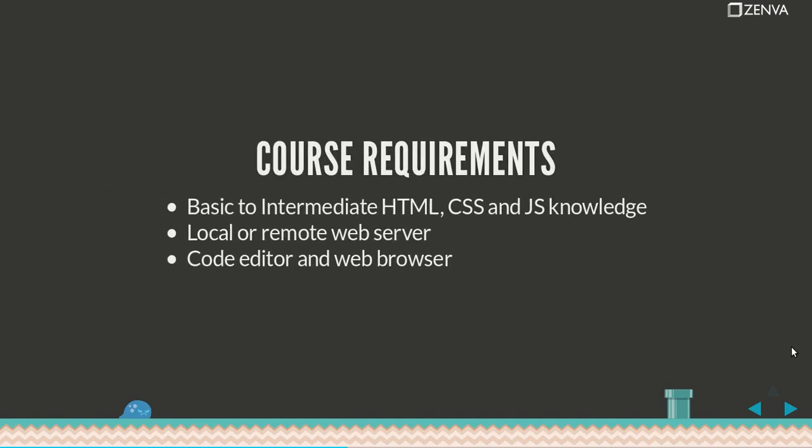The requirements for this course: you need to have basic to intermediate HTML, CSS and JavaScript knowledge. In particular, you need to be familiar with JavaScript objects, JSON and ideally have some basic notions of object oriented programming. In order to run the course examples, you'll need access to a local or remote web server. You can easily install Apache no matter which operating system you're using.